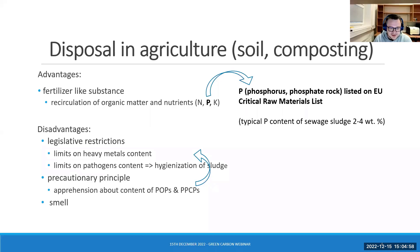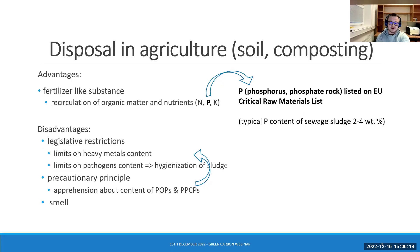Those disadvantages would be the legislative restrictions on heavy metals, which are eventually present in the sewage sludge. Also, there are some pathogens present, and recently there is big apprehension about the content of persistent organic pollutants and pharmaceuticals and personal care products. So that basically means if we use sewage sludge directly on the soil, we bring all these contaminants into the soil itself.